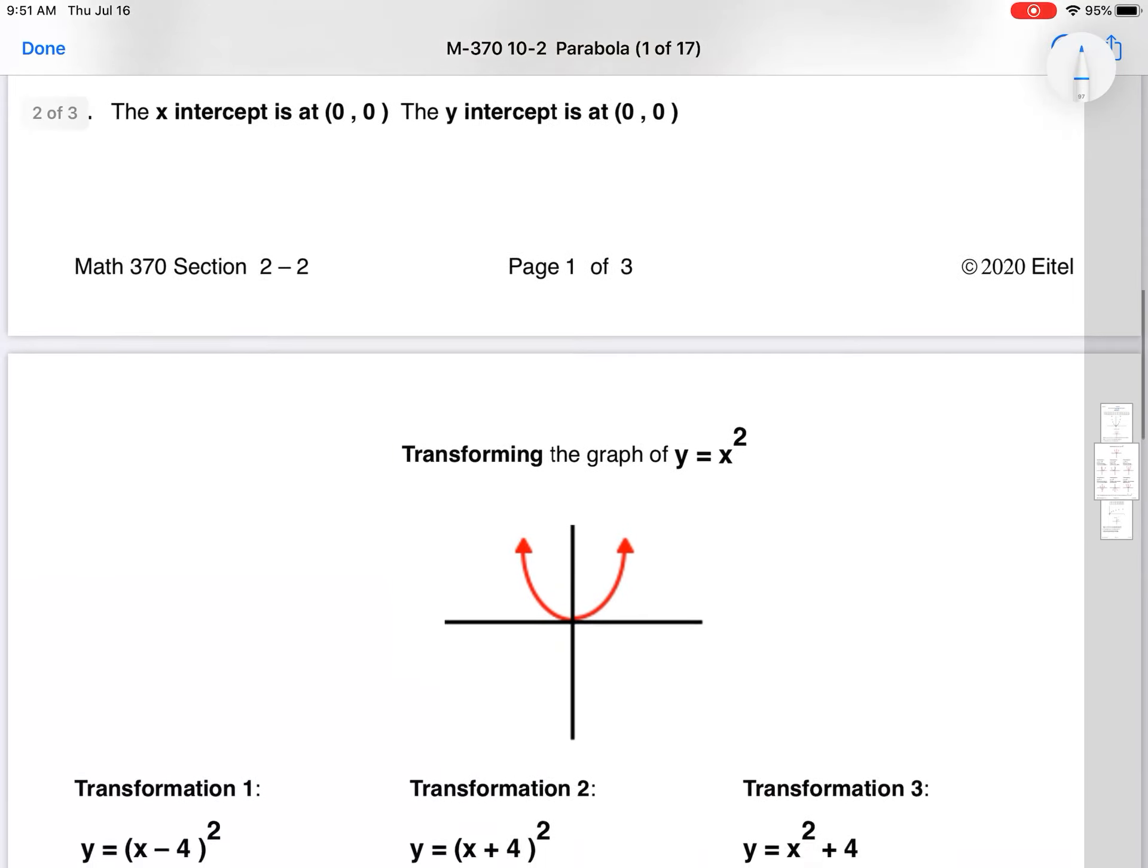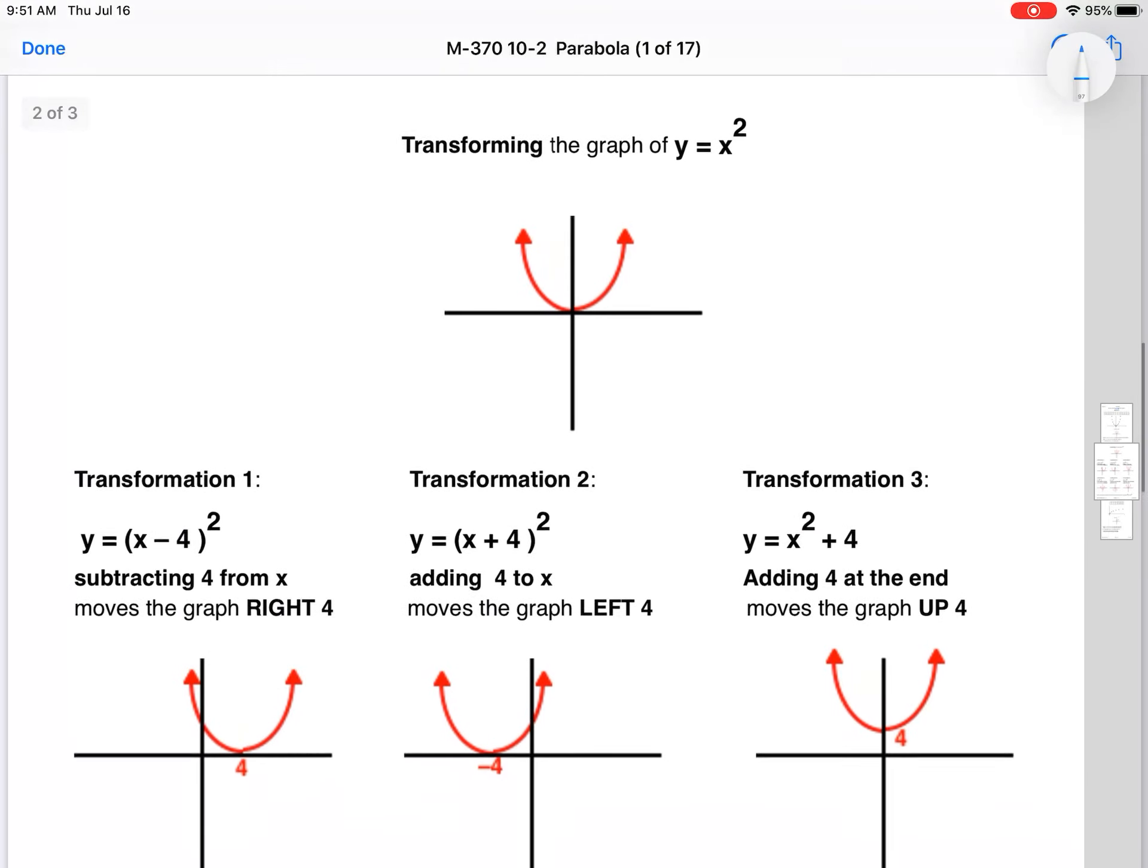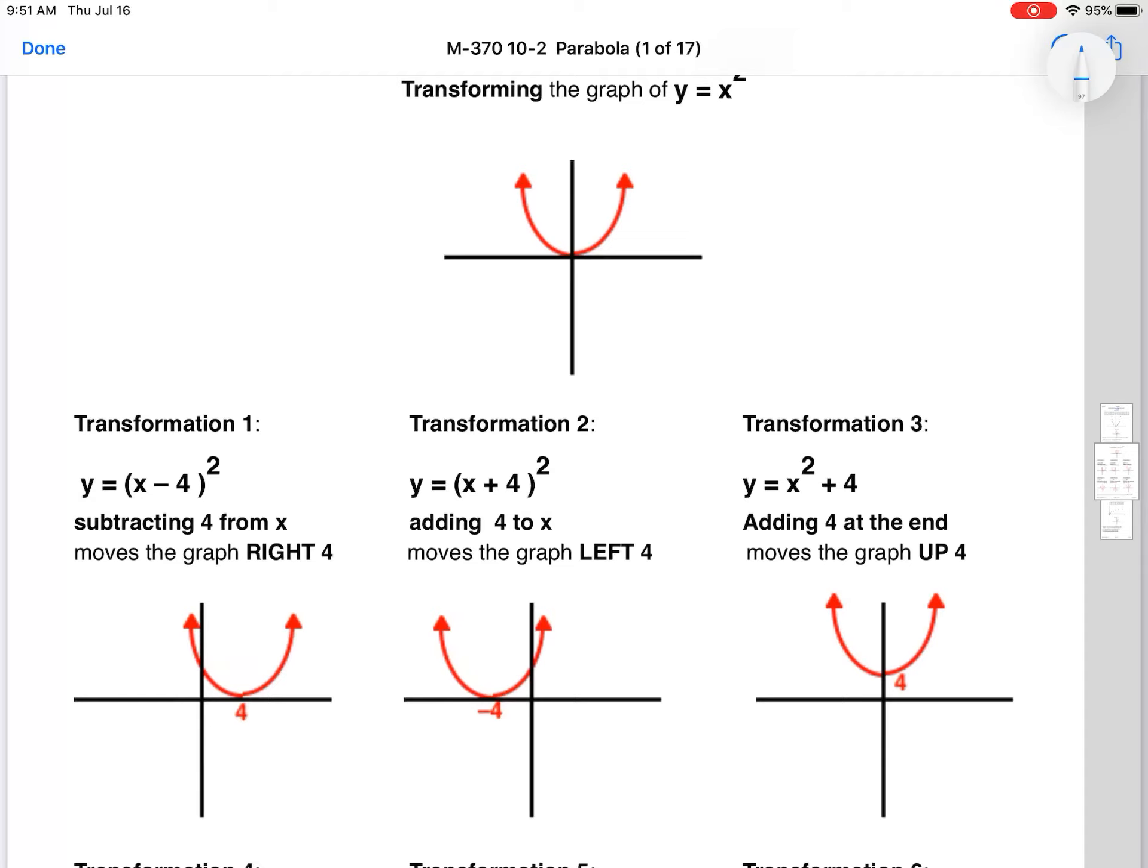As we look at transforming this graph, you've seen these transformations before. We've used them in previous classes and reinforced them here. Transformations is going to be an important part, and not just the transformations but understanding the core. If we understand that basic parabola shape, then we know with transformation number 1, when we have x minus 4 quantity squared, that's going to shift us 4 units to the right.